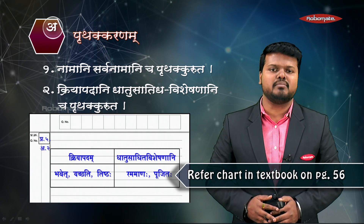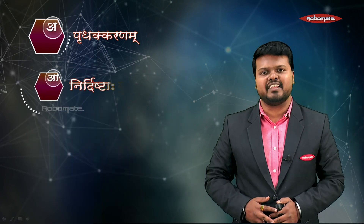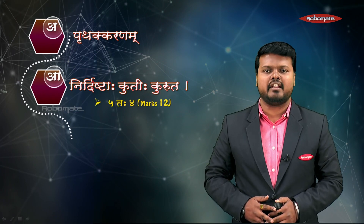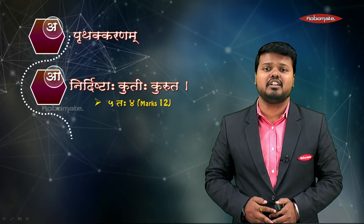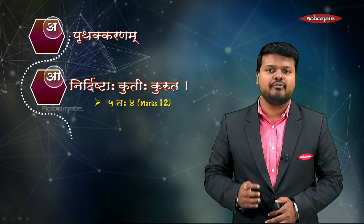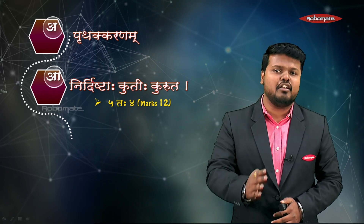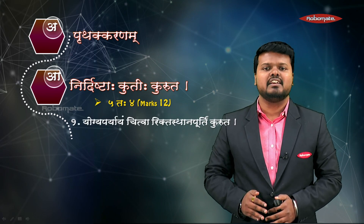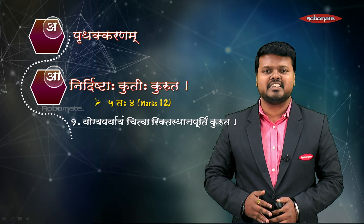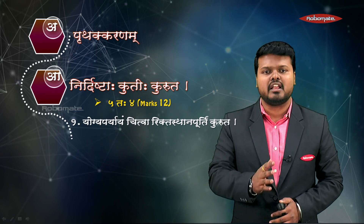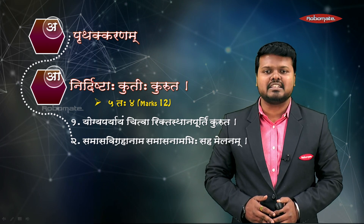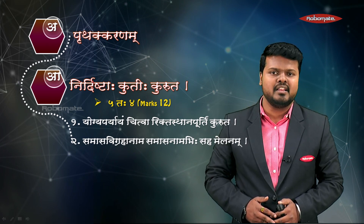We can practice from the textbook page number 56. The next question is Nirdishtaha Krutihi Kuruta — out of five questions we attempt any four for 12 marks, but for safety we can attend all five. The first question is Yogyapariyayam Chitva Riktasthana Purutim Kuruta, which means choose correct alternatives. Next is Samasa Vigrahaanam Samasa Nama Bhi Sahamelanam, where we match pairs for Samasa.